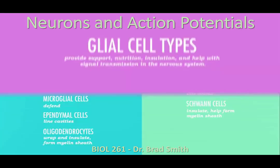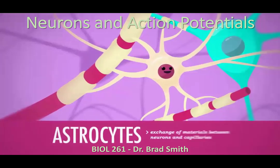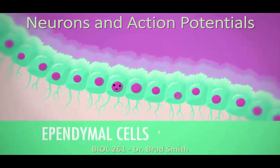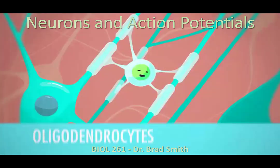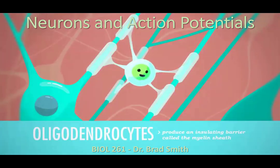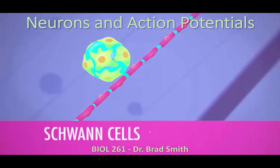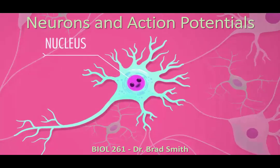This lecture covers Chapter 8, Part 1. There will be two lectures over Chapter 8, and this lecture will include material from sections 8.1 through 8.3. We'll be talking about neurons and action potentials, and it corresponds with your Chapter 8 Study Guide Part 1. You can refer to that for vocabulary, learning objectives, and the questions you'll be turning in.